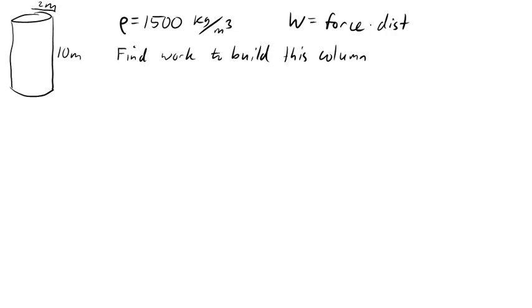We're trying to find the work needed to build this cement column, where the radius is 2 meters, the height is 10 meters, and the density of the cement is 1,500 kilograms per cubic meter.